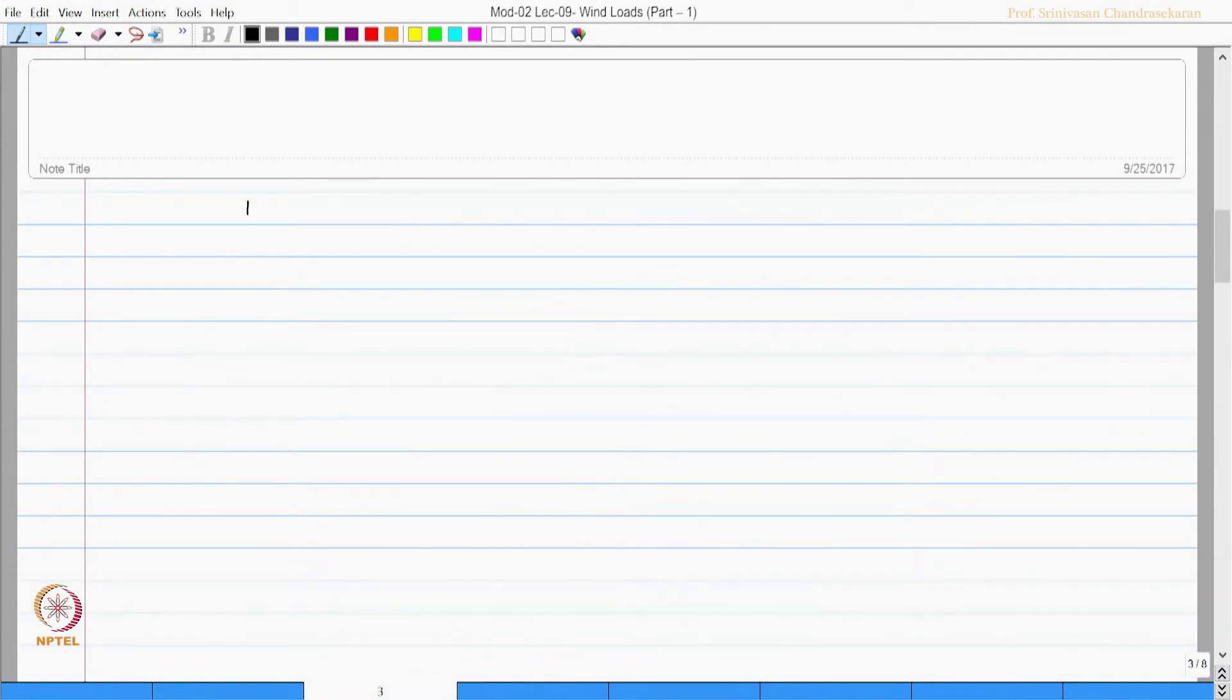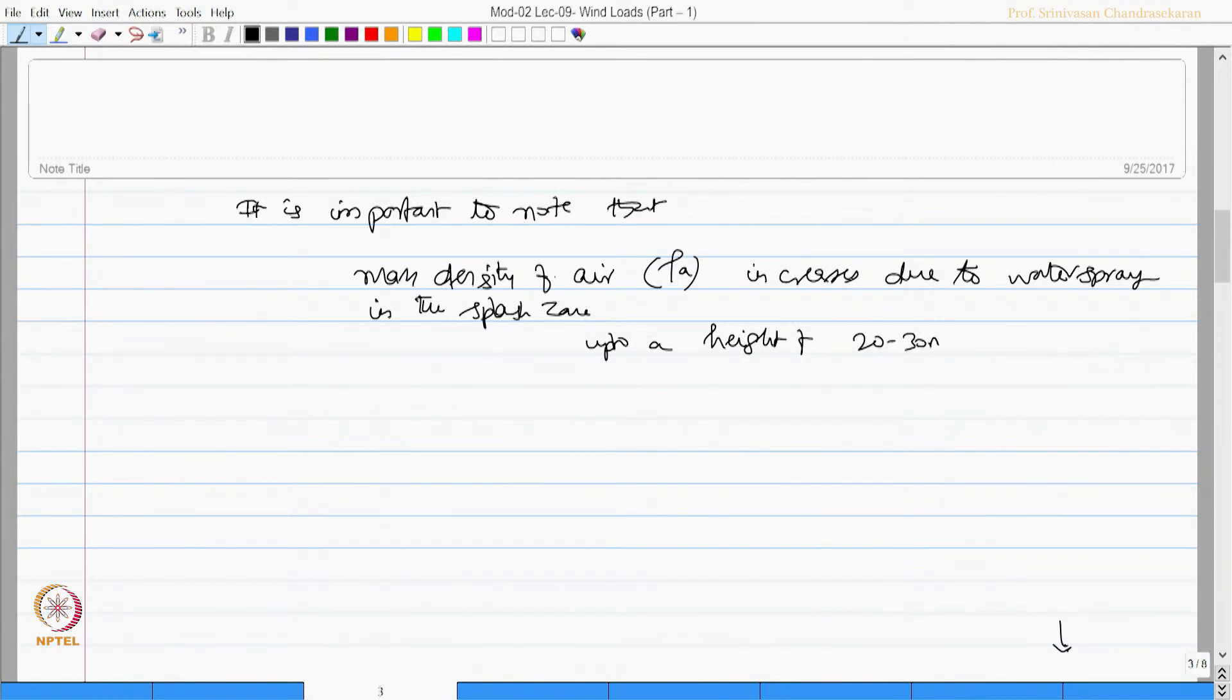It is important to note that the mass density of air, rho_a, increases due to water spray in the splash zone up to a height of about 20 to 30 meters above mean sea level. So rho_a is actually not constant.